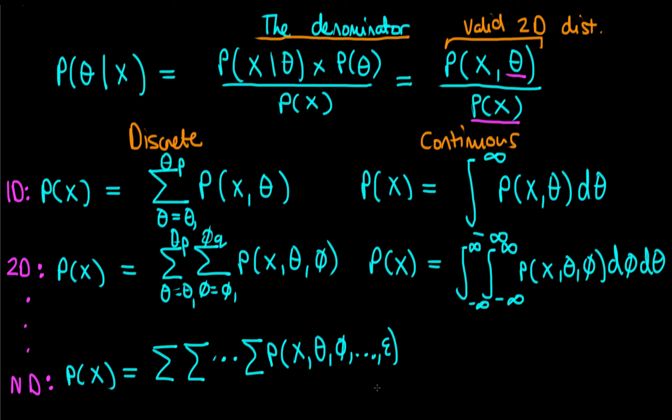How do we do the continuous case? We have to do n integrals. Now we do the n-dimensional integral, so we have n integral signs of the joint distribution P of x theta phi etc all the way up to epsilon, and we're integrating with respect to epsilon and all the other parameters and phi and finally theta.